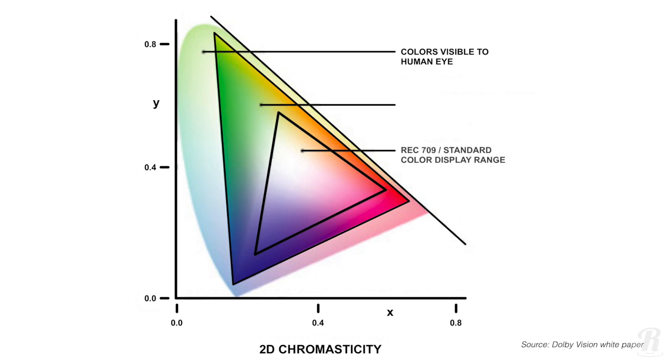Here's the gamut for Rec. 709, the standard for delivering and displaying HD and UHD material. Rec. 709 is an SDR, or Standard Dynamic Range, gamut, meaning that the brightness values of each color are limited to 100 nits, nits being a way to measure brightness.